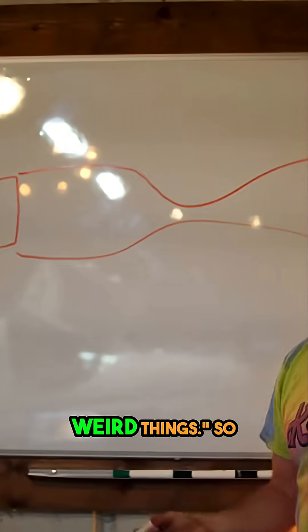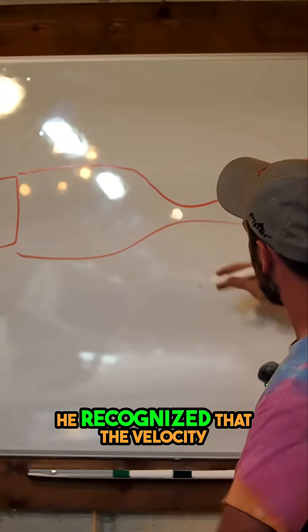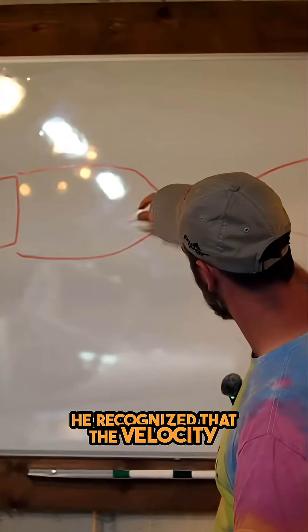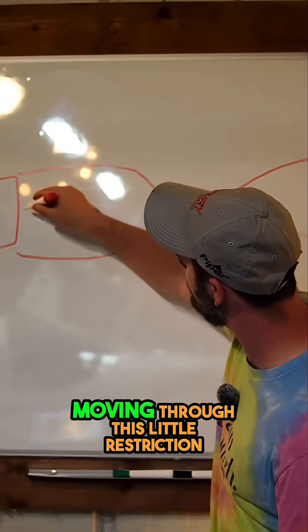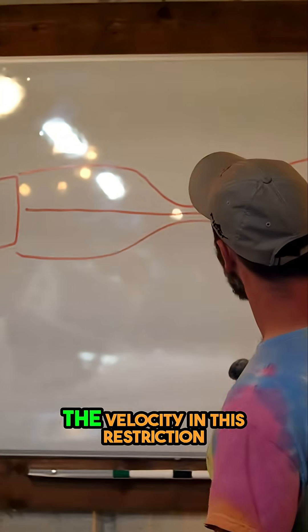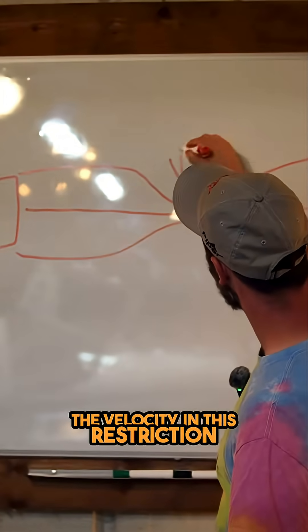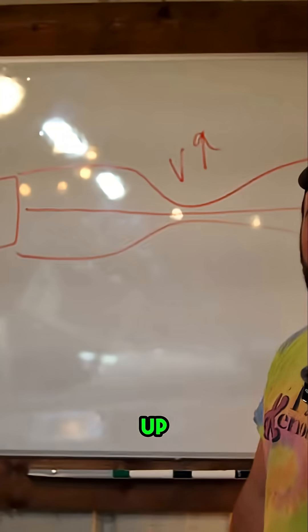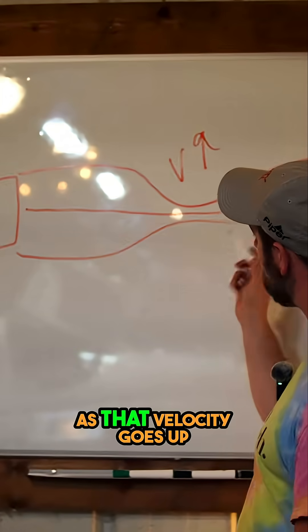What he also recognizes is that as that velocity goes up, the pressure goes down. Now you might be looking at this going, we're talking about airplanes, why is he drawing tubes with restrictions and talking about French people, Bernoulli, and all this jazz?